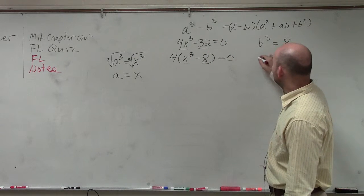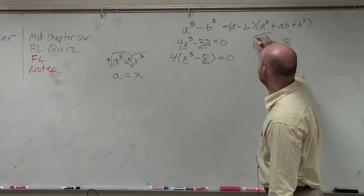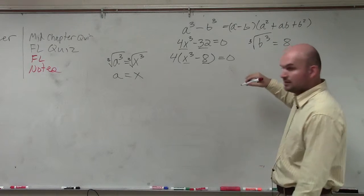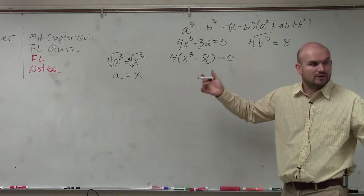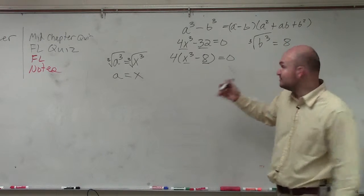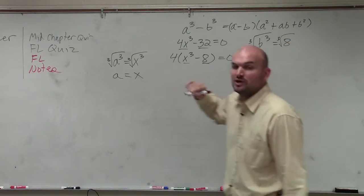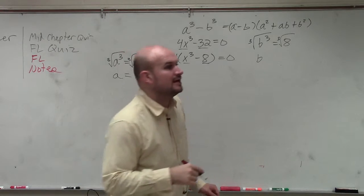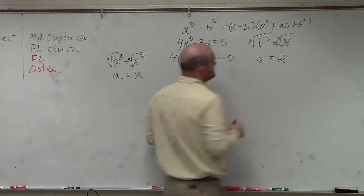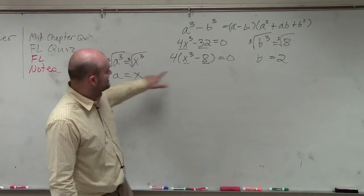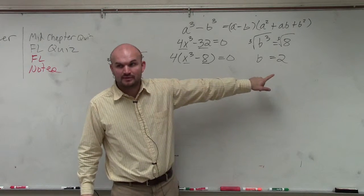Then we do the same thing over here. I want to know what b is. So to find b, I'm going to take the cube root of b cubed. Well, what number or what variable multiplied by itself three times gives you b cubed? B. Take the cube root of both sides. What number multiplied by itself three times gives you a positive 8? 2. Does everybody see then that a is x and b is 2?